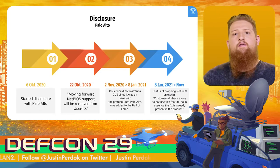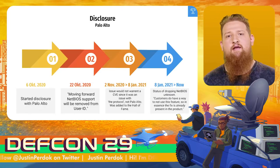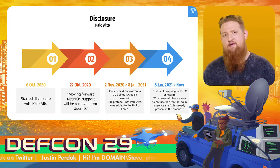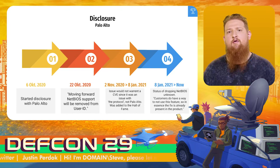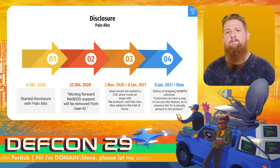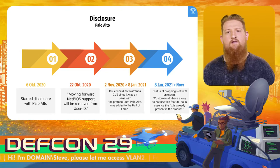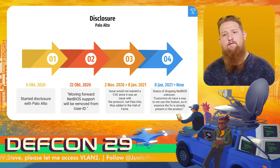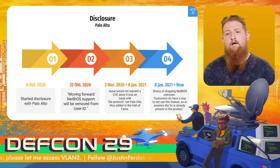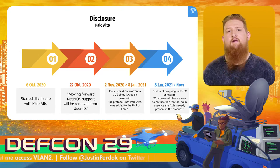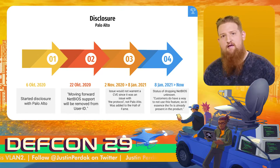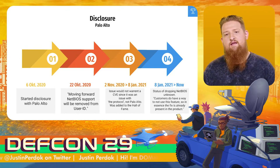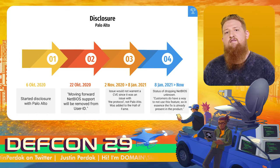Now let's cover the disclosures. I started with Palo Alto and shared two findings: the SMB hash disclosure and the actual firewall ACL bypass. I was informed that NetBIOS-based client probing will be dropped from a future version of Palo Alto User-ID. After some time, I was told this issue would not warrant a CVE because it was an issue with the Microsoft protocol itself and not Palo Alto. Then I was added to the Hall of Fame. I currently don't know the status of dropping NetBIOS — the latest vendor response was that the fix is already present because the client doesn't need to use this.